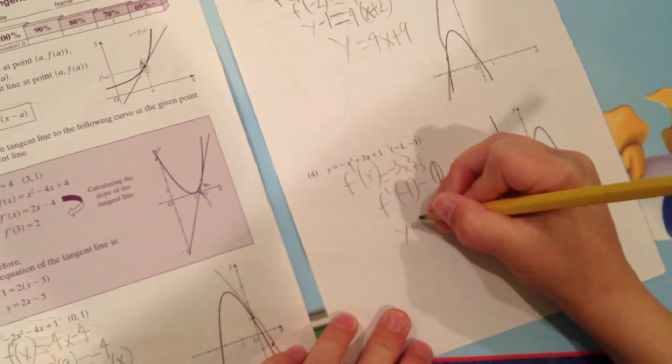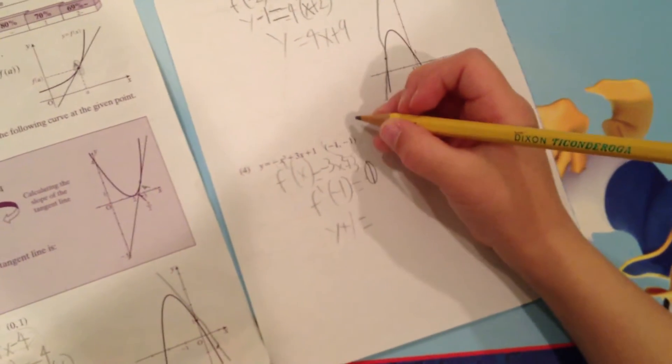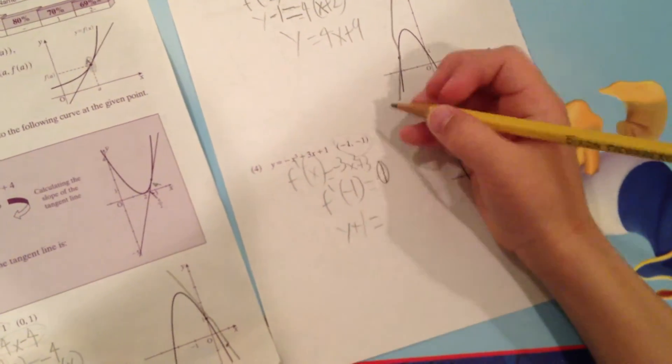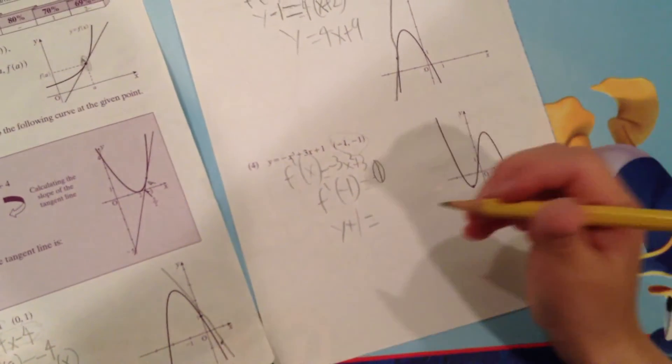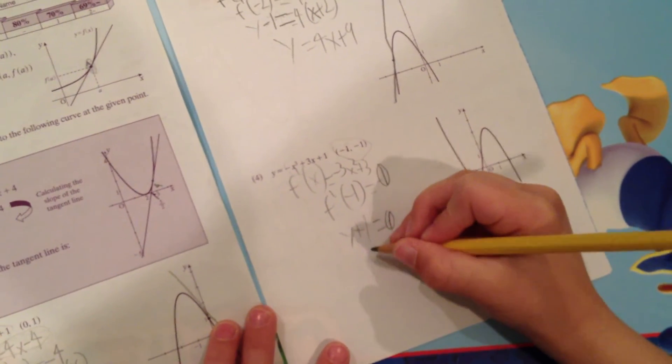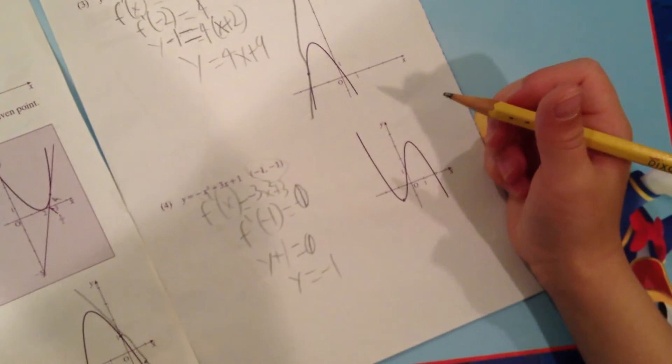Times a negative is a positive, so plus 1 equals f prime of a is the derivative of negative 1, which is 0, so 0 times, so I just know that's going to be 0. And then y equals negative 1.